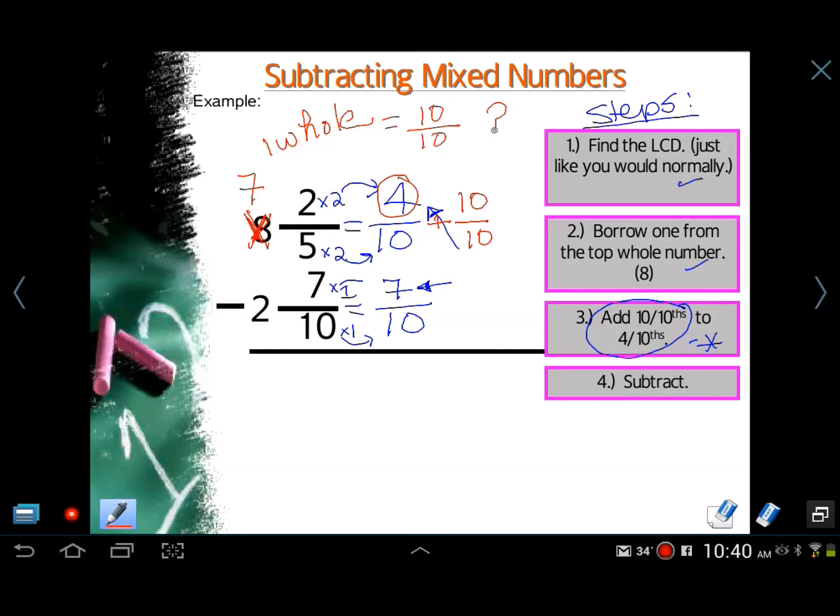Why did we use ten-tenths? Because that was the common denominator we found already. So whatever the LCD is, that's what you use. If the LCD is eight, we would add eight-eighths. If the LCD was twelve, we would add twelve-twelfths. It depends on whatever the LCD is. So now I've got four-tenths plus ten-tenths, and that equals fourteen. So this becomes a fourteen.